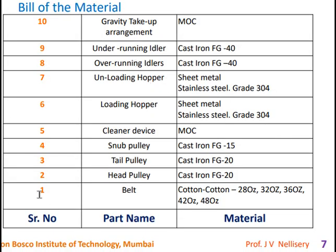The bill of materials for the conveyor: (1) Belt — made of cotton, available in 28, 32, or 48 oz thickness. (2) Head pulley — cast iron FG 200. (3) Tail pulley — cast iron FG 200. (4) Snub pulley — cast iron FG 15. (5) Cleaner device — per manufacturer. (6) Loading hopper — sheet metal. (7) Unloading hopper — sheet metal. (8) Overrunning idler — cast iron FG 40. (9) Underrunning idler — cast iron FG 40. (10) Gravity take-up — per manufacturer.